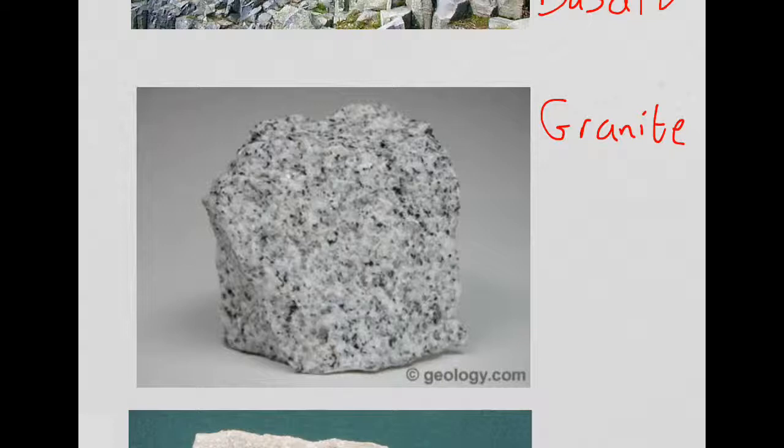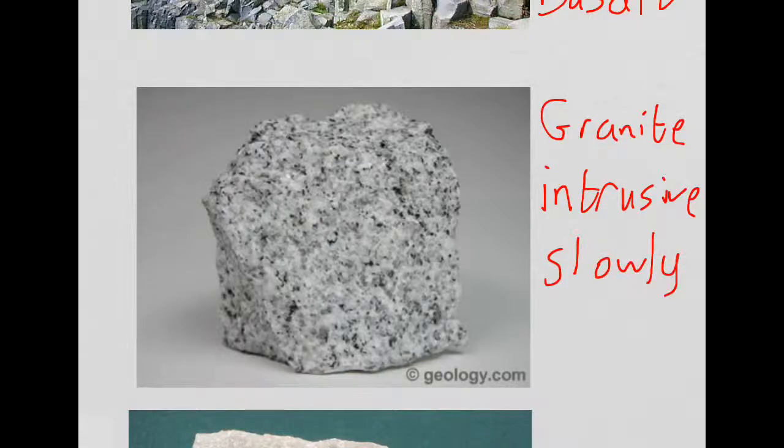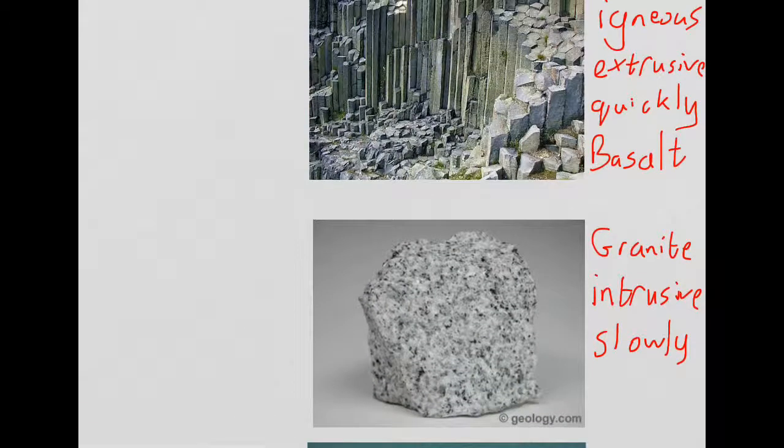Granite is formed when magma cools underground. If it cools underground, it's called intrusive, which is the opposite of extrusive. Because it's cooling underground, it cools slowly, giving us large crystals. Granite is intrusive and cools slowly, making it another igneous rock type.